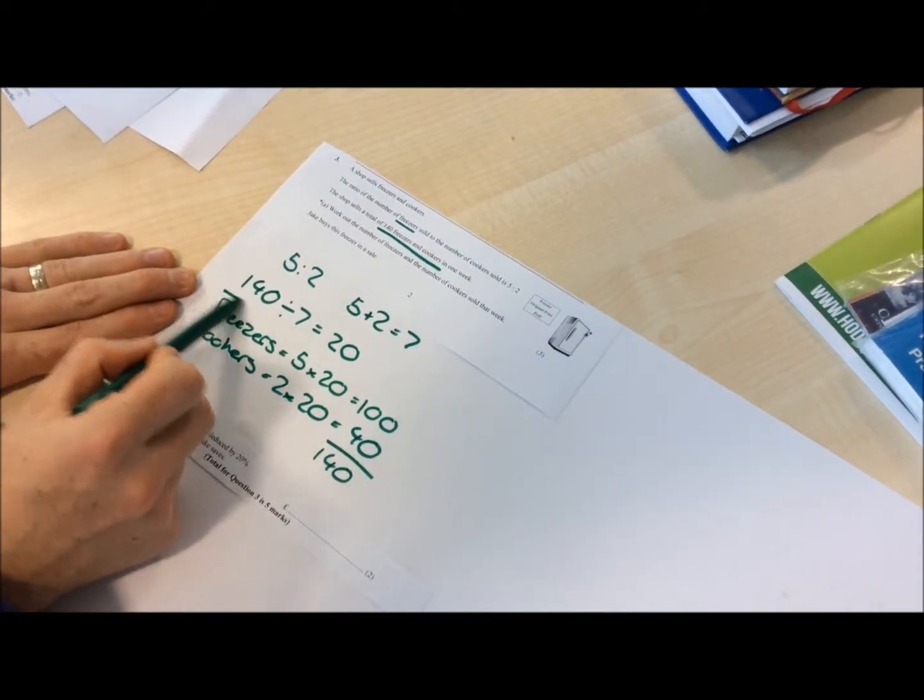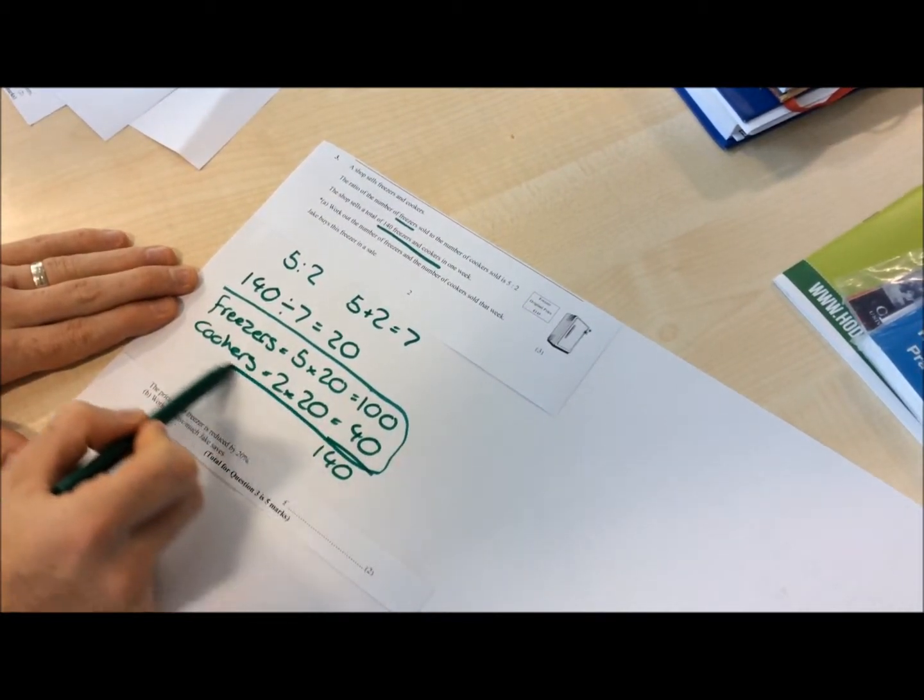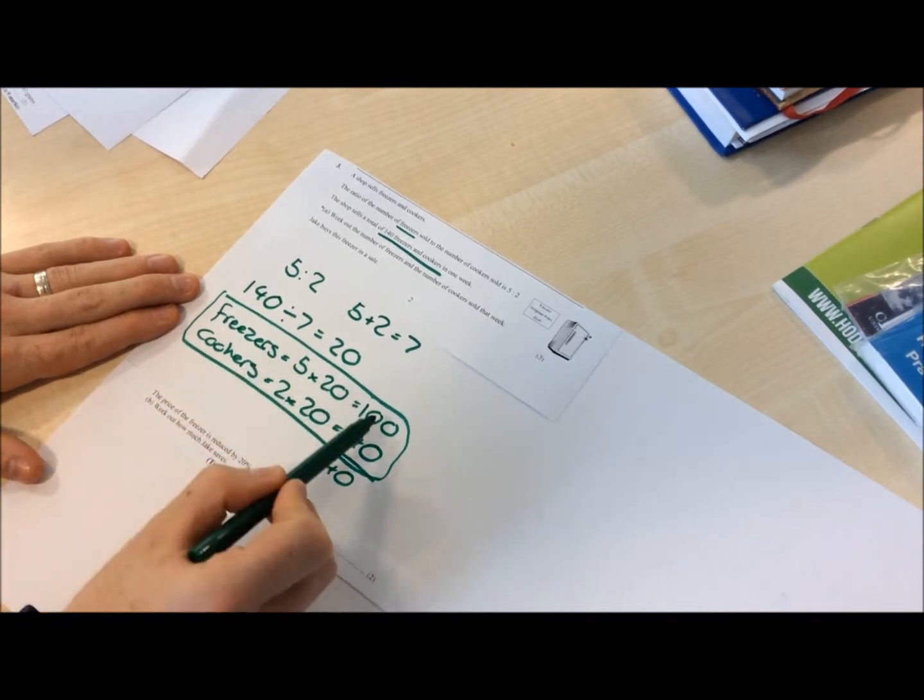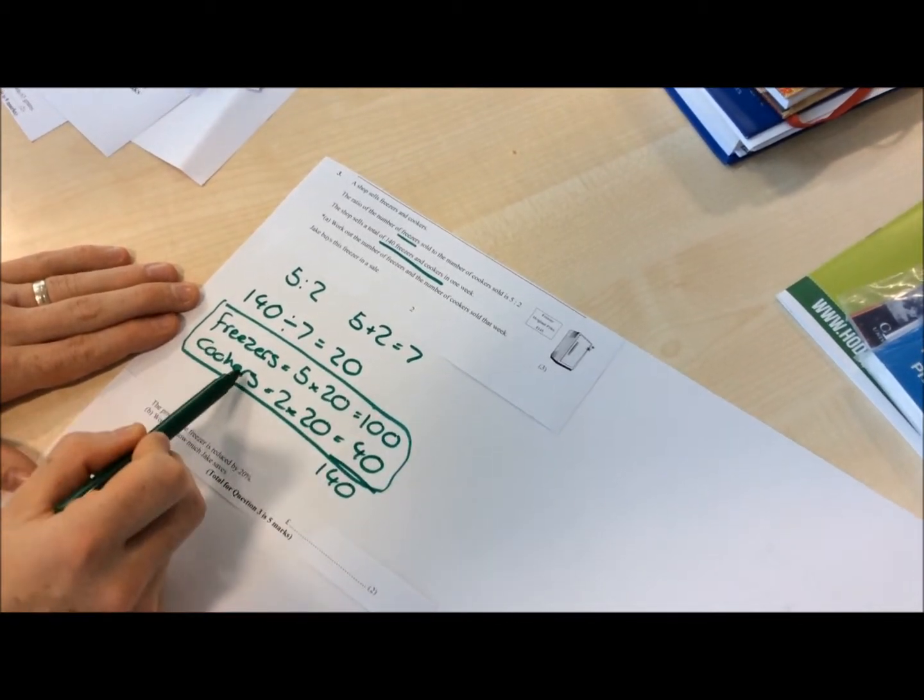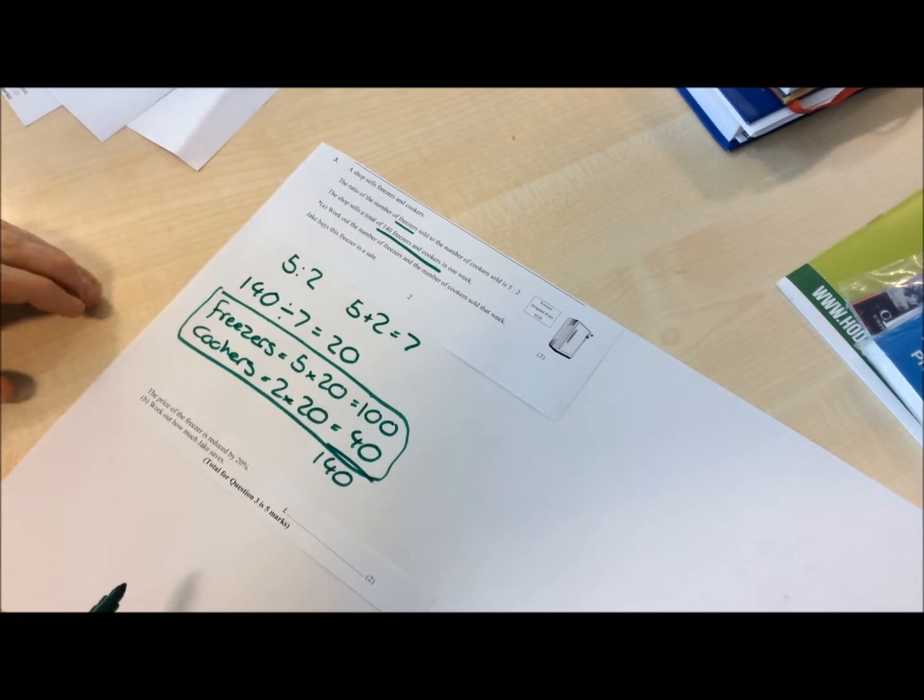In this question, to get the final mark, you had to link together the word freezers with the number 100 and the word cookers with the number 40 to get that final mark.